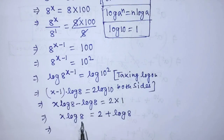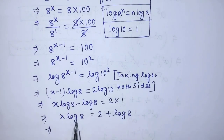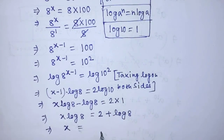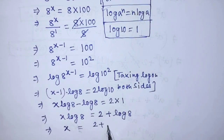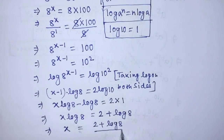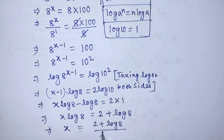Again we transpose log of 8 from the left hand side to the right hand side, so on the left hand side we get x is equal to — on the right hand side we get 2 plus log of 8, all over log of 8. So this is the value of x.